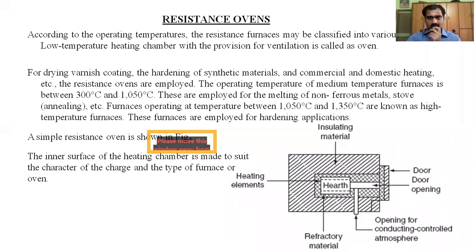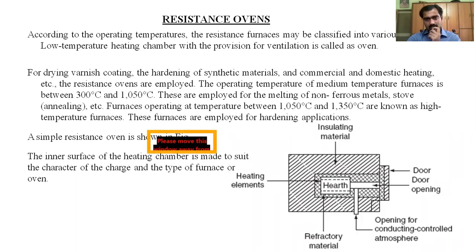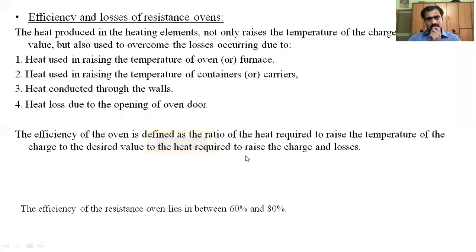When three phase supply is available, we place three electrodes to heat the charge. As an example, in resistance ovens operated between temperature ranges of up to 1050 degrees centigrade and 1350 degrees centigrade — for medium temperature furnaces, the range is 300 to 1050 degrees centigrade. For hardening metals, very high operating temperatures are required, and those are high temperature furnaces operating above 1050 degrees centigrade. Efficiency of these ovens is about 60 to 80 percent.